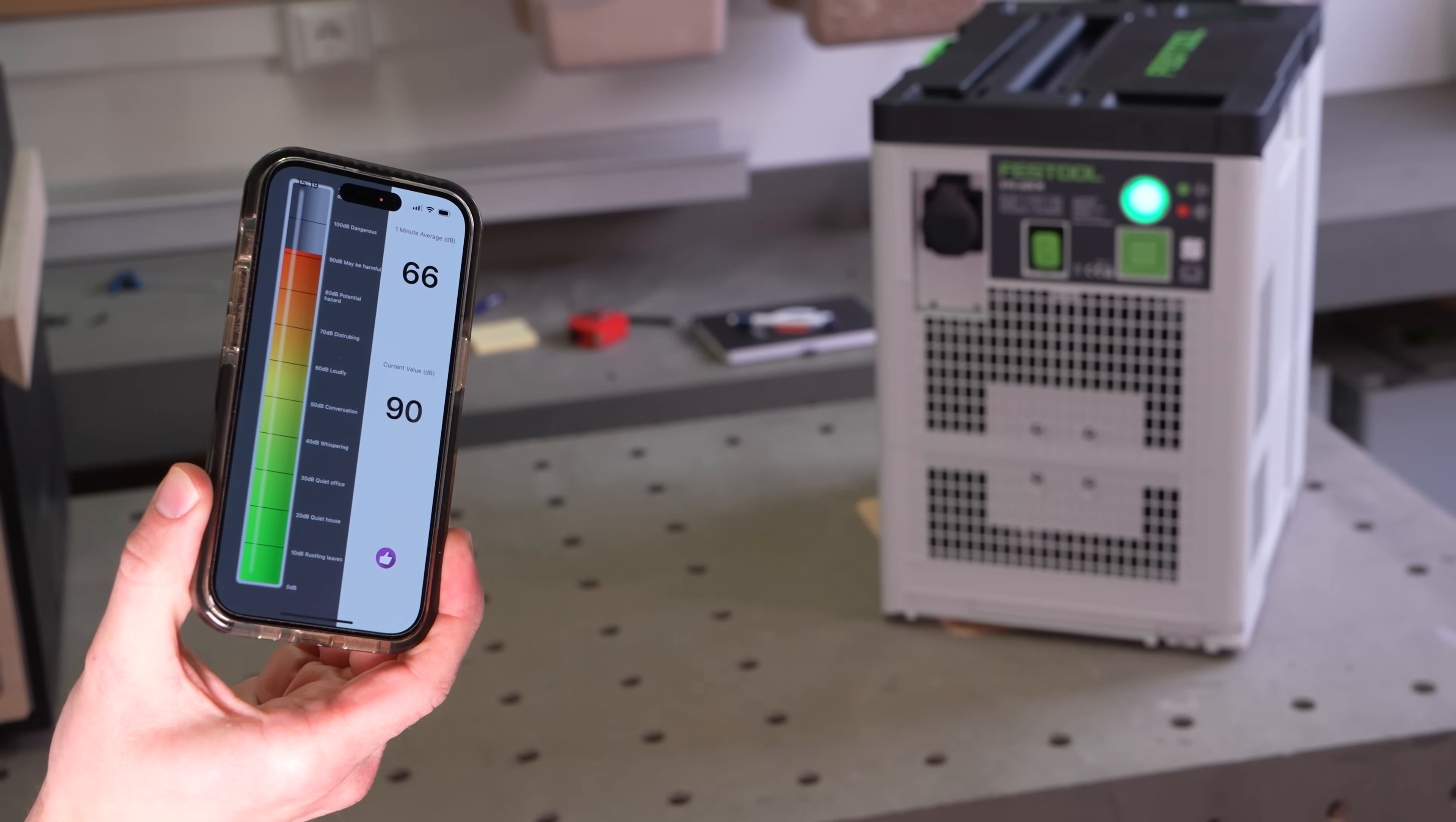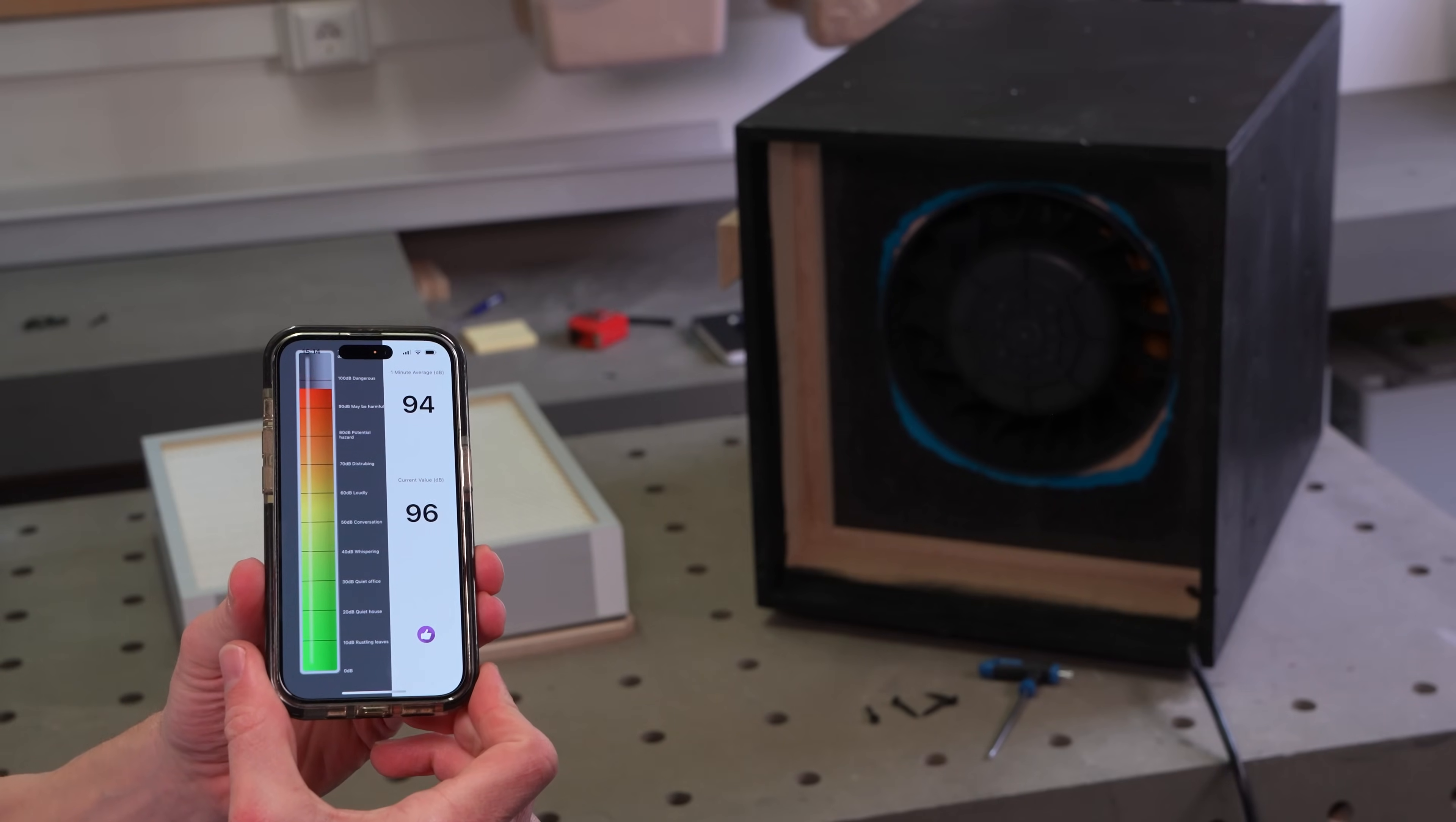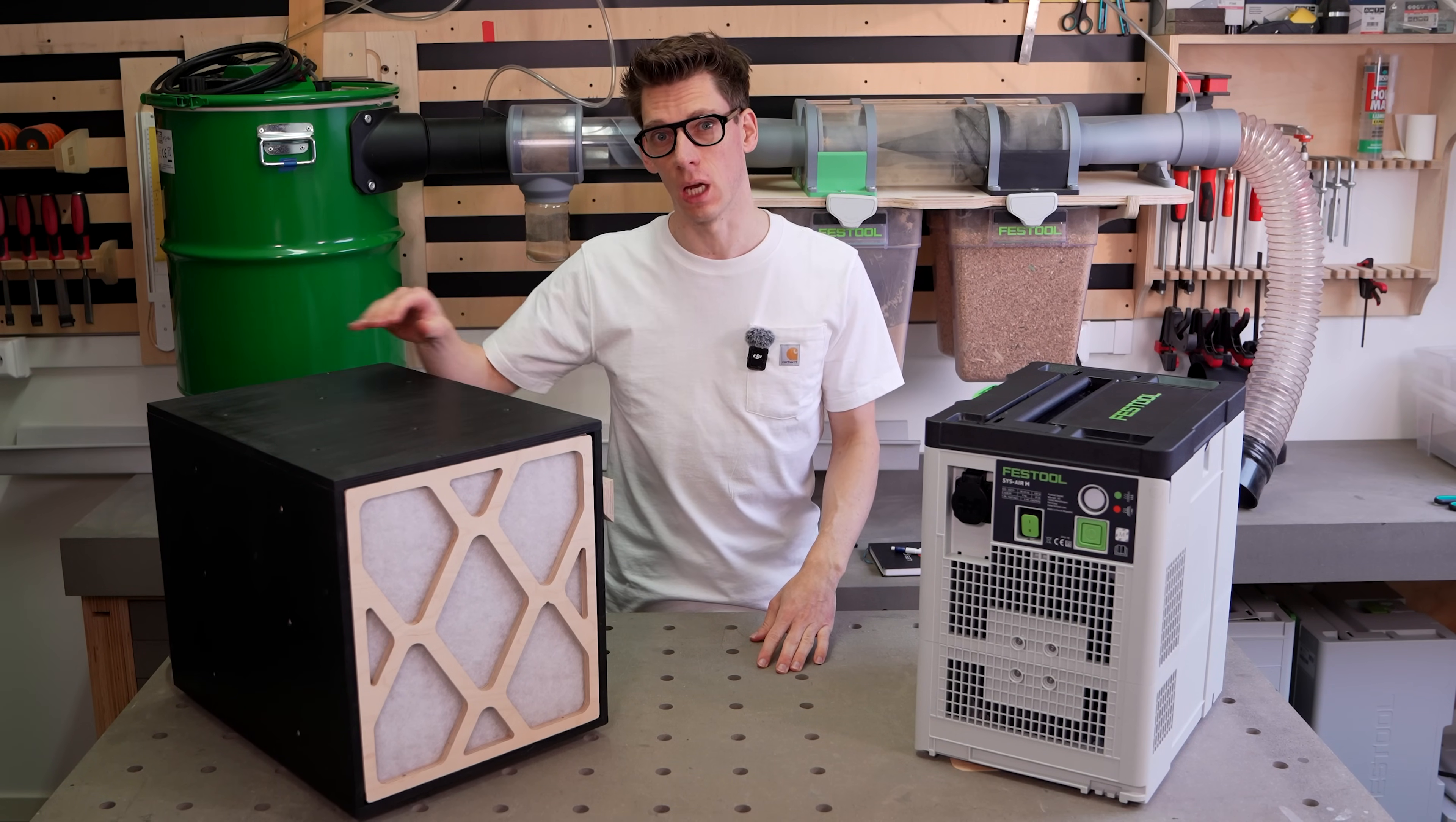Now let's switch to my version with the HEPA filter in place. And without the HEPA filter. The sound level on the tube fan was way too loud for me. So that's why I put the HEPA filter behind it to dampen the sound.